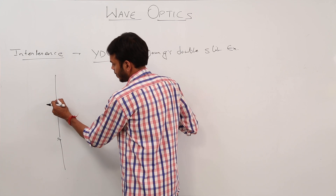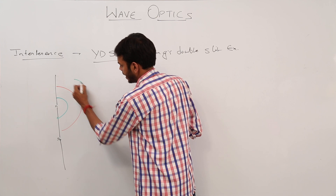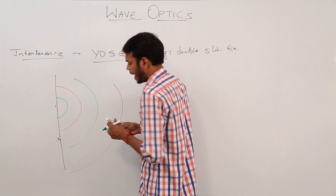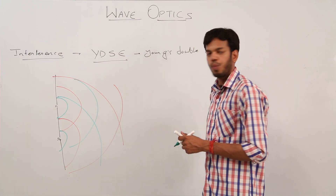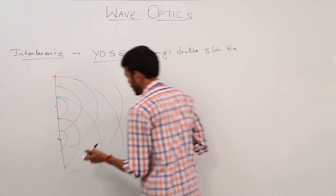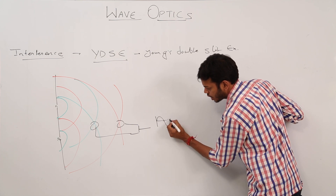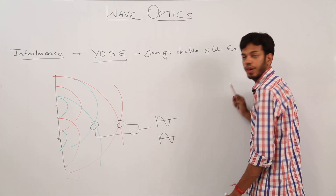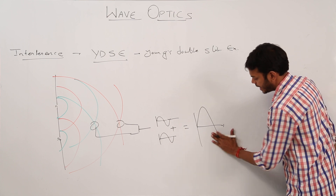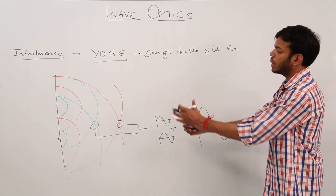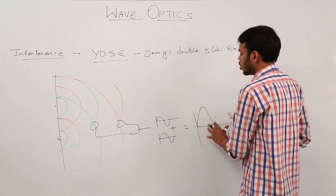From each source, we get a crest, then a trough, then next crest, and so on. There are points where both crests from one source superimpose on crests from the other, and troughs superimpose on troughs. When these two waves get added up, the resultant is a bigger waveform. This is called constructive interference — both positive energies give a resultant of more positive energy. We also call this maxima.